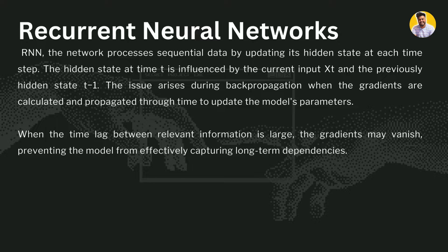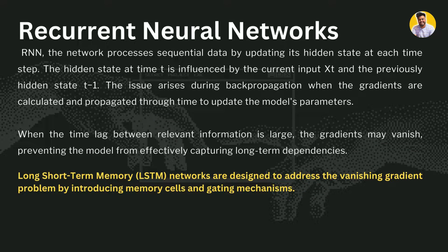That issue is solved by long short-term memory networks, which are an extension of recurrent neural networks. LSTMs address the vanishing gradient problem by introducing memory cells and gating mechanisms. This is the same LSTM network that will be used in the next word prediction project.